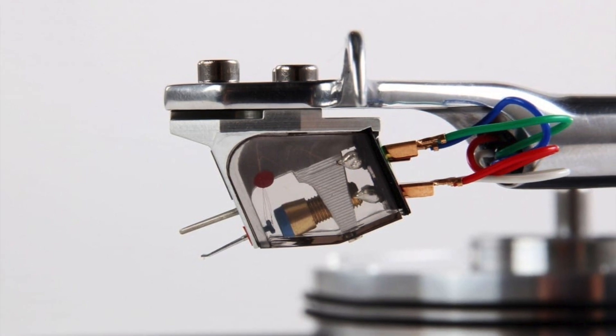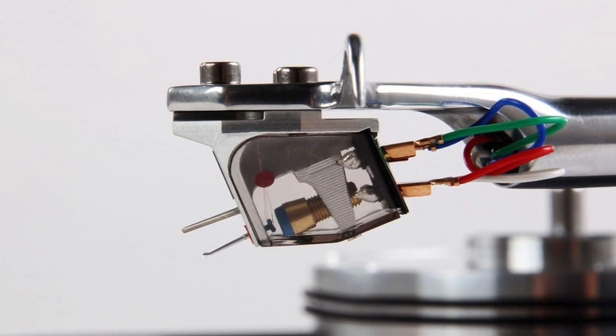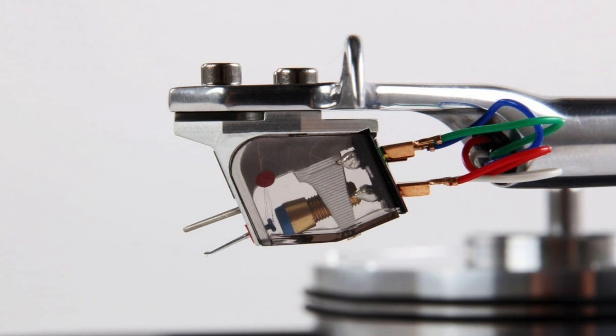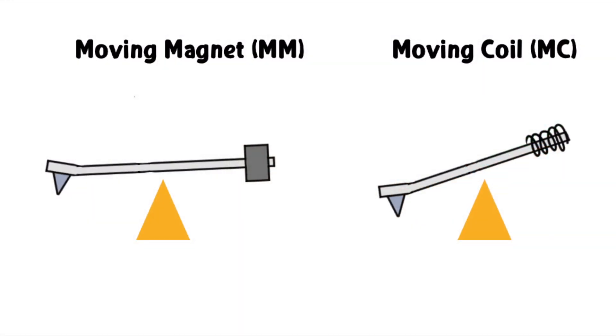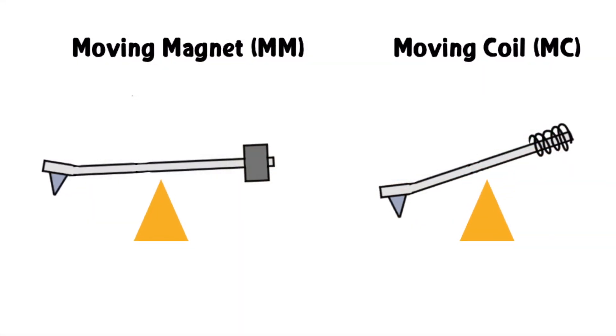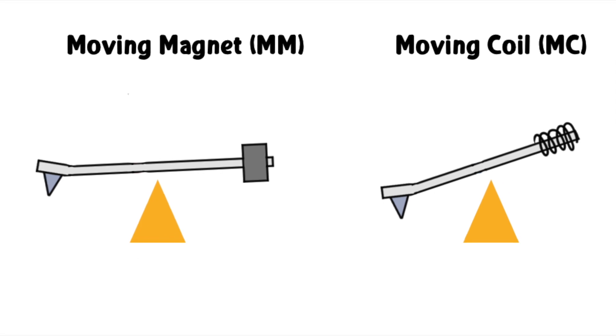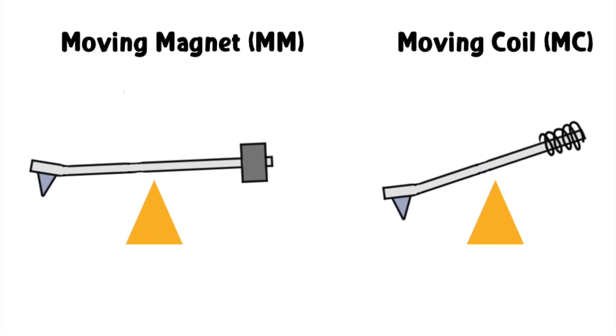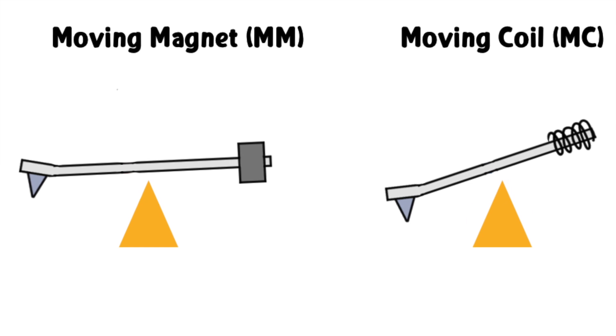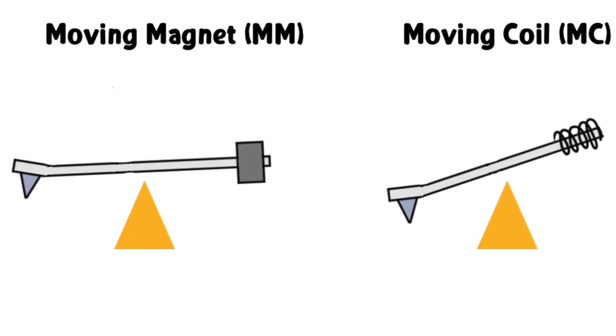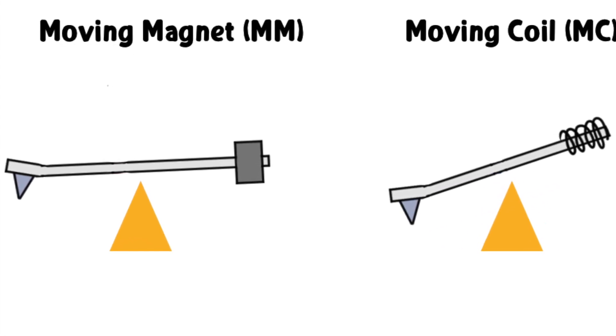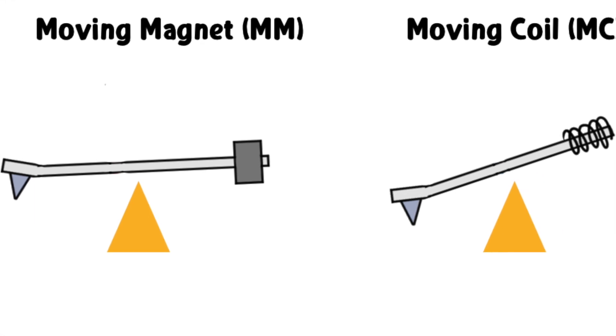Now, one thing the moving coil cartridge has going for it is the fact that the cantilever has less pressure on it to do its job. Think of it like a tiny seesaw. At one end is the diamond tip of the stylus, and at the other is either a set of magnets or a set of coils. Now, which do you think would allow the stylus to react better to the surface area of the grooves? The coils. They win in this instance.